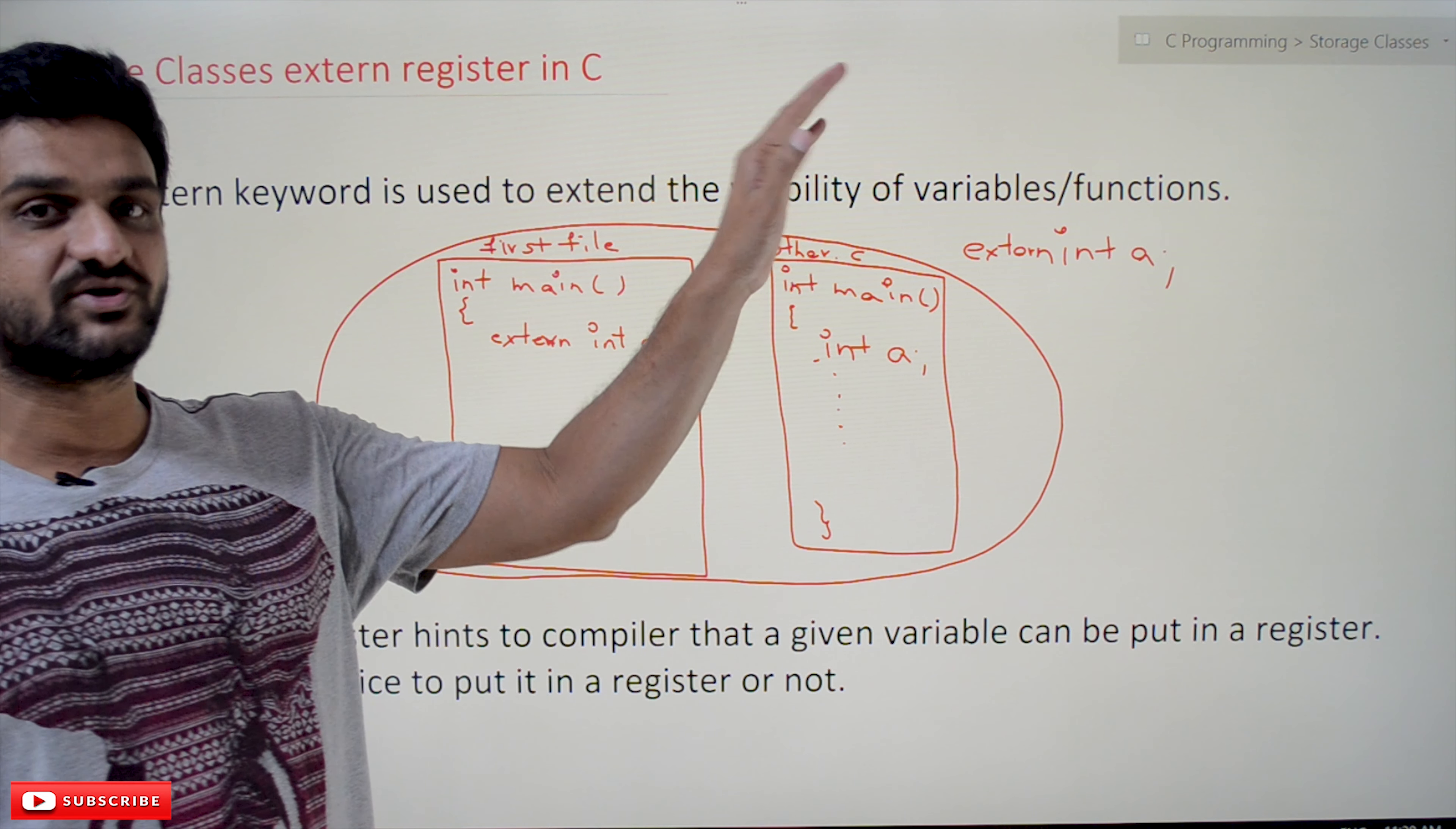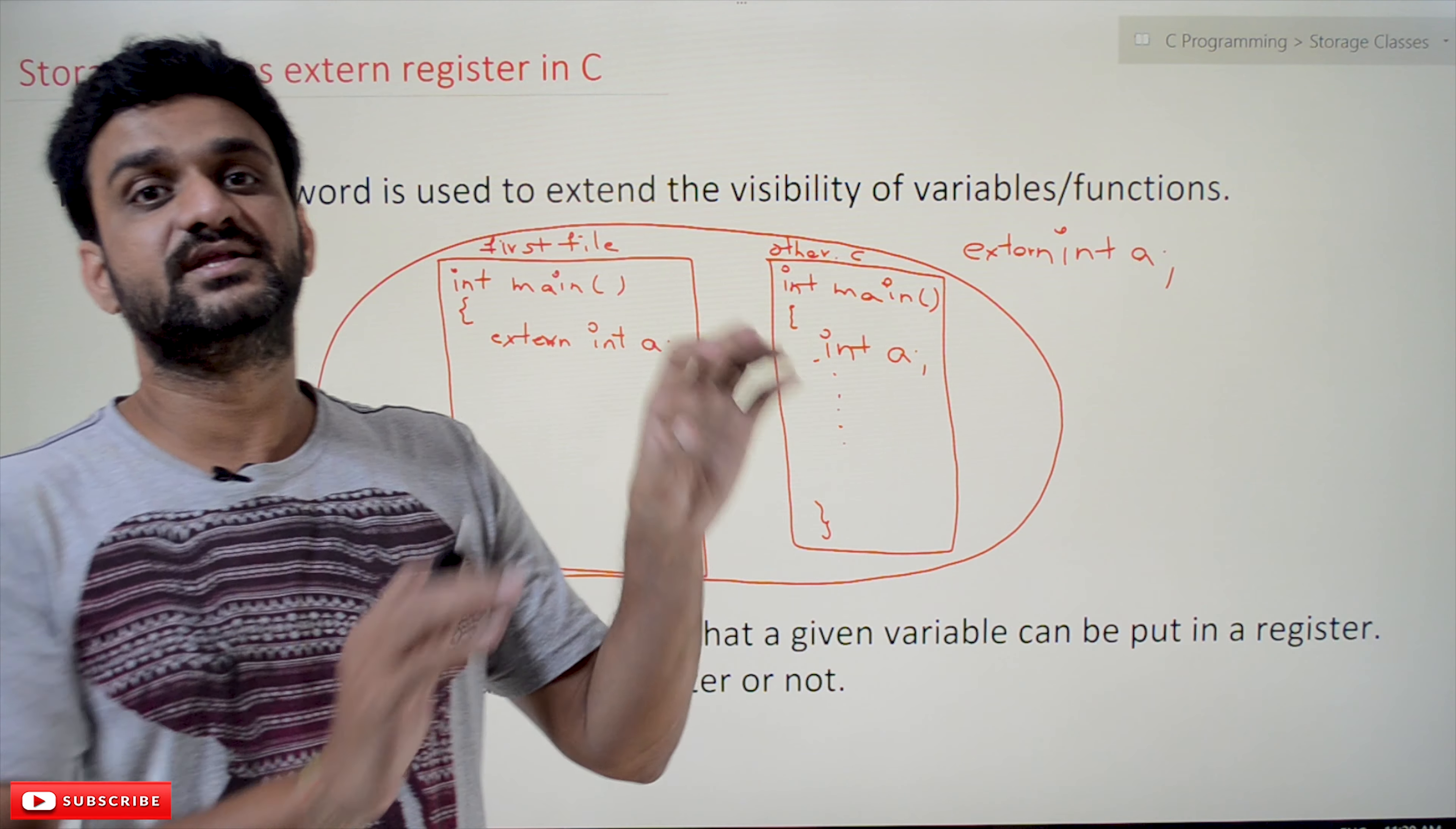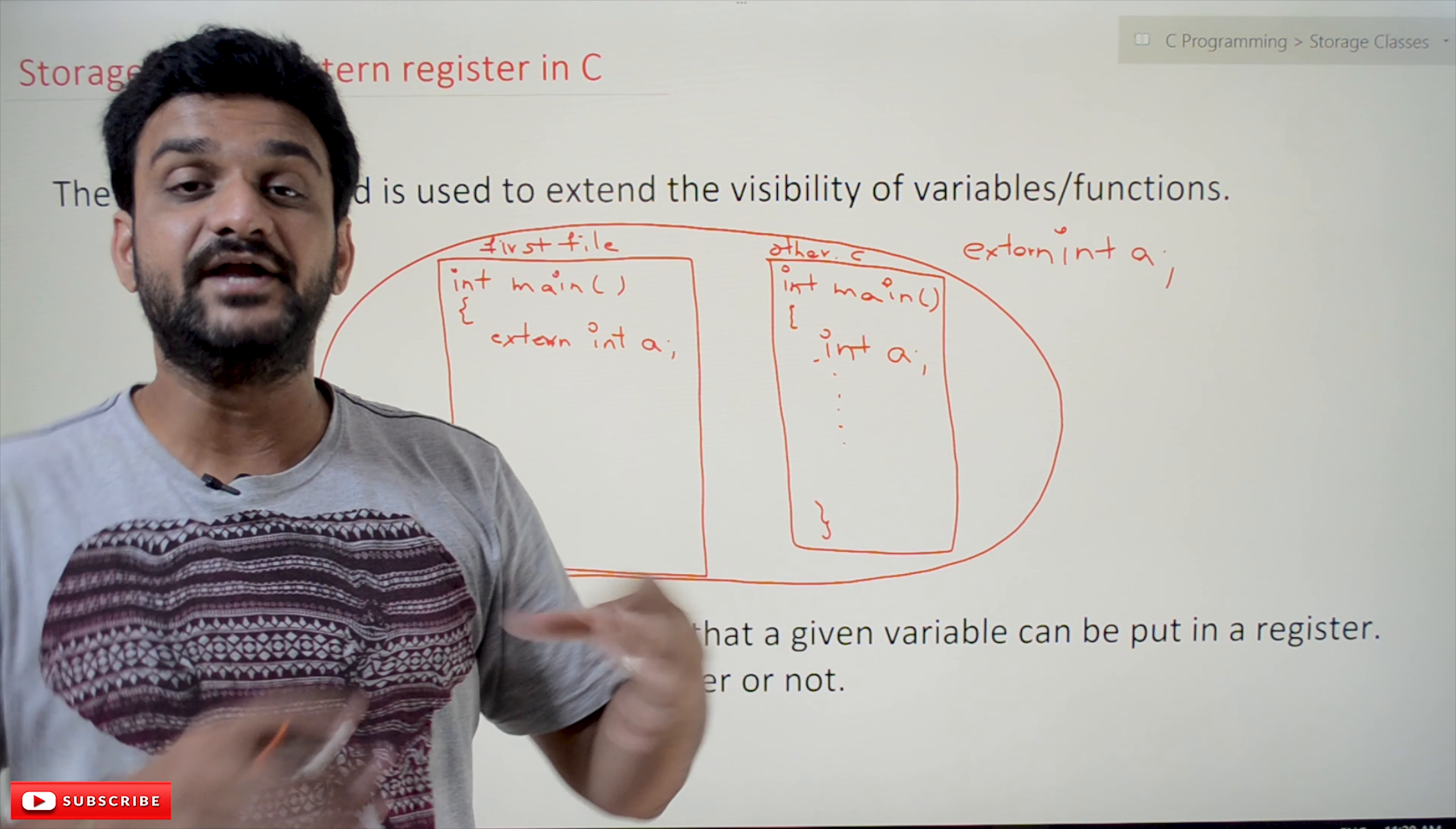Let's try to understand the concept of extern. Extern keyword is used to extend the visibility of variables or functions. In what way it is helpful - generally the extern concepts are not used in a single file. If the program is located in a single file, generally the use of extern is of no use.